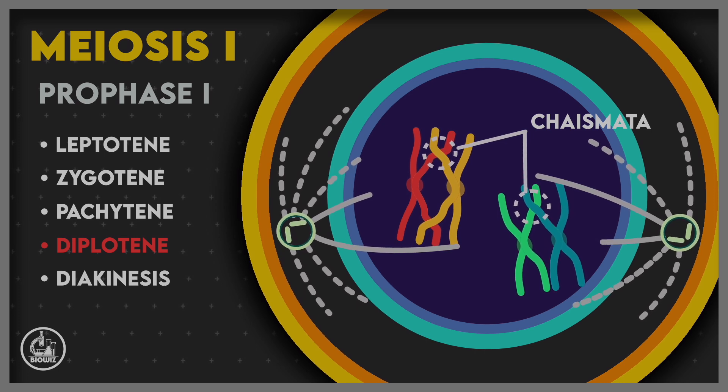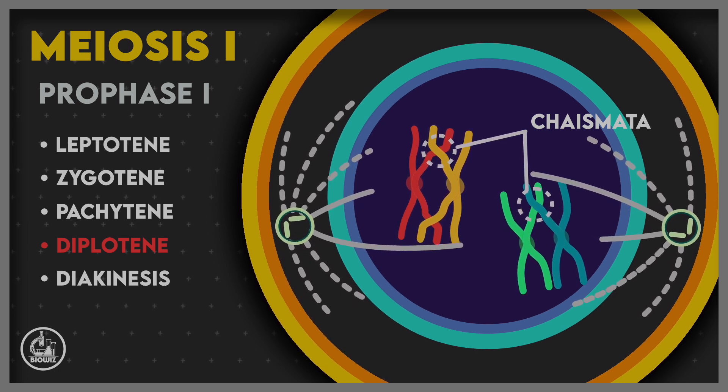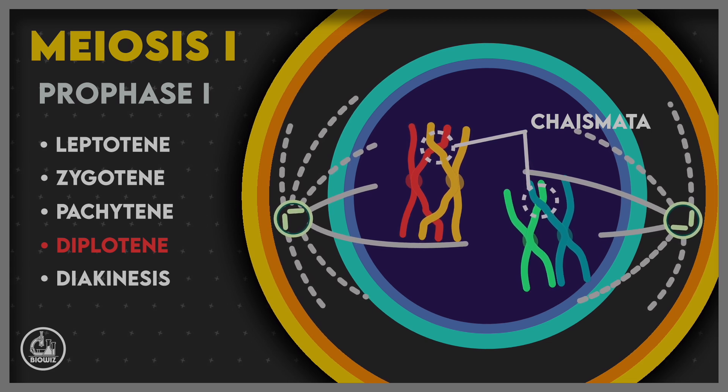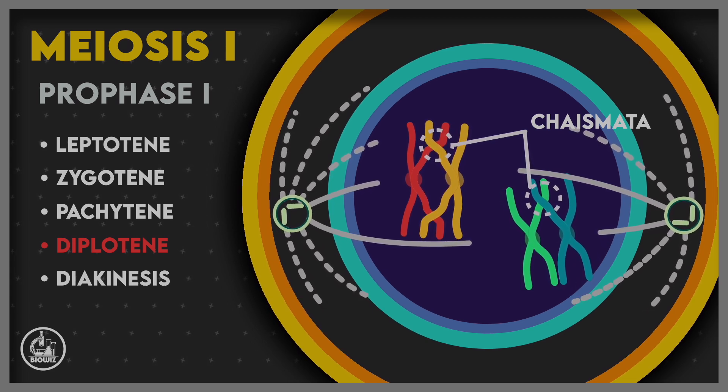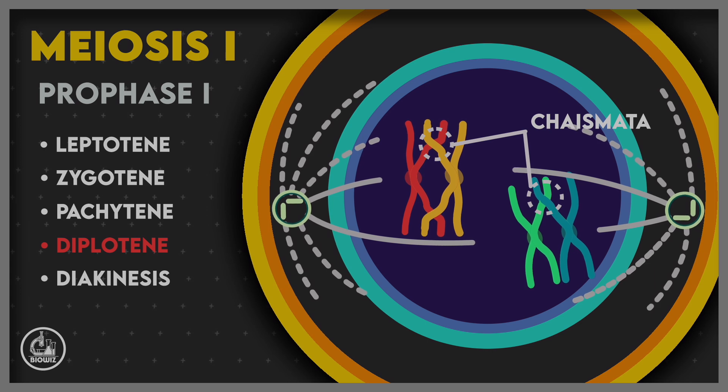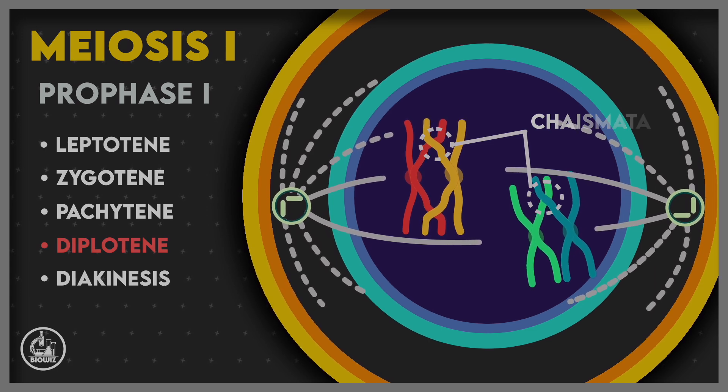In primary oocytes of some vertebrates and invertebrates, meiosis I can get arrested in diplotene stage from a few months to several years. This extended diplotene stage is called dictiotene.